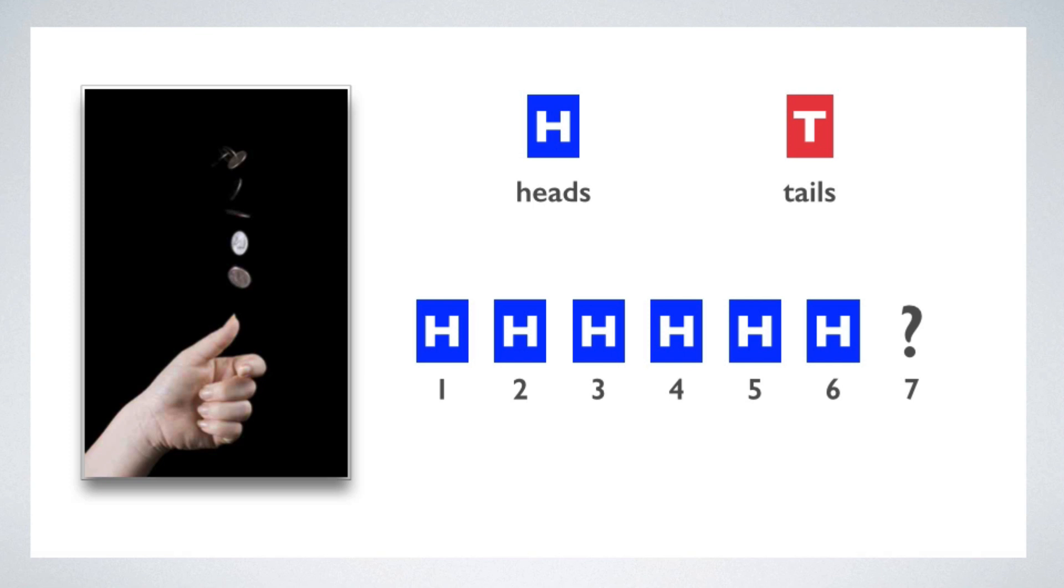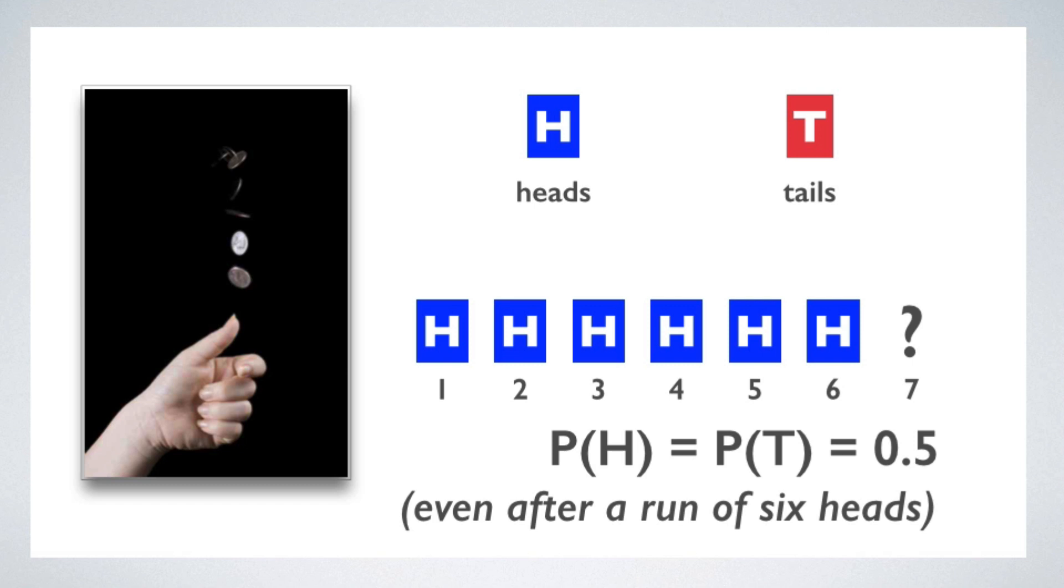And that's all true. So it's natural to think that the next toss is more likely to land tails than heads. But just because it's natural doesn't make it right. We call it the gambler's fallacy for a reason. The truth is that the probability of the coin landing heads on the seventh toss is exactly the same as the probability of it landing tails, 50%, even after a run of six heads in a row.